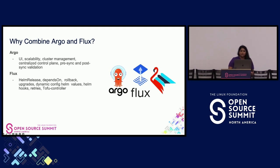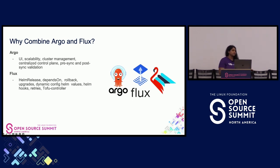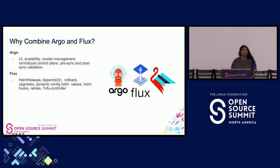Why even combine Argo and Flux? Argo obviously has a great UI, it's scalable, has cluster management and centralized control plane, and there's pre-sync and post-sync validation as well. Flux has Helm release support using the true Helm API for its deployments, whereas Argo uses a Helm templating option. So if you're trying to do a Helm list or use the Helm CLI to interact with your Helm releases, you can't in Argo, but you can in Flux. If you're really invested in Helm, that's a nice reason to use Flamingo. Also, Flux has Depends On, which allows you to order deployments — this app depends on this one.